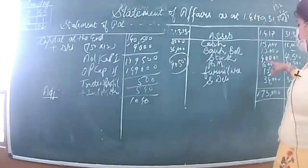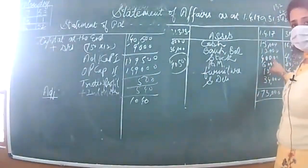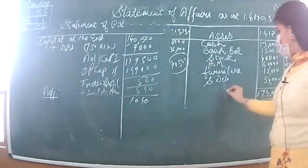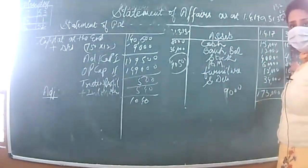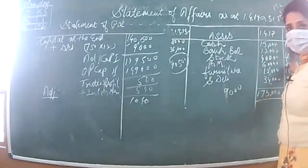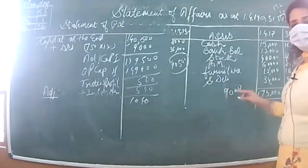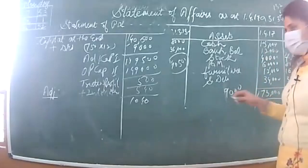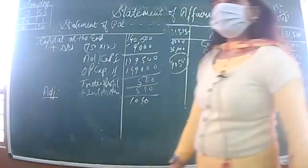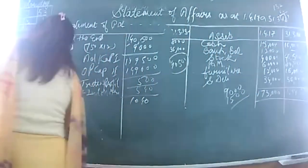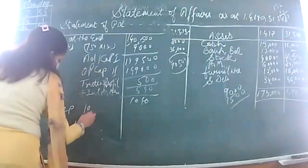Depreciation on machine: 15% on opening balance of 60,000 = 9,000. For new machinery worth 20,000 purchased on 30th September (mid-year), depreciation is 15% for 6 months = 1,500. Total depreciation on machine = 10,500. Less depreciation on machine: 10,500.